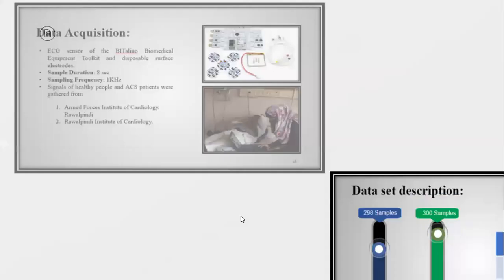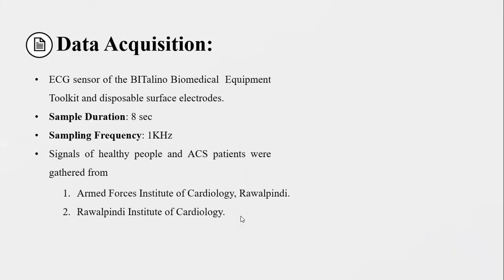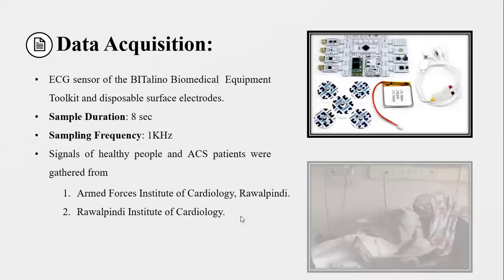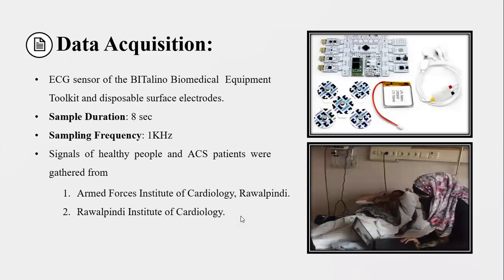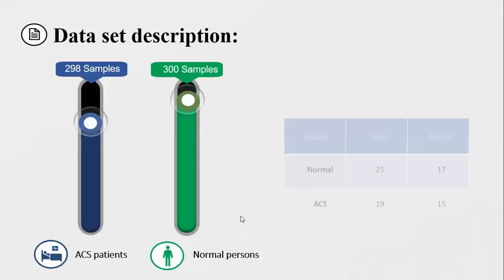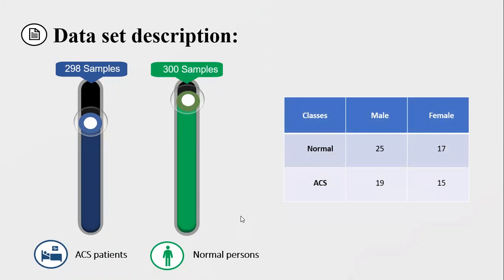Firstly, we go towards data acquisition. ECG signals dataset was acquired using ECG sensor of Bitalino, the biomedical toolkit, and surface electrodes. Data was acquired at the sampling rate of one kilohertz and the sample duration of eight seconds. Dataset is summarized in this slide. Data was collected from a total of 76 subjects, including 42 normal subjects and 34 ACS subjects.